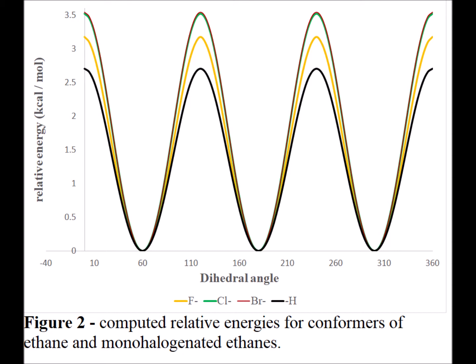If we monosubstitute the ethane with a single halogen, we get a very similar picture, except that the barriers get slightly larger from 2.7 kcal per mole to almost 3.5 kcal per mole. As the halogen gets larger, the rotational barrier gets slightly larger. But even looking carefully at Figure 2, the curves for chlorine and bromine are so close together they're almost impossible to distinguish. The maxima for monosubstituted fluoroethane is roughly 3.2 kcal per mole, occurring in exactly the same position as for unsubstituted ethane.